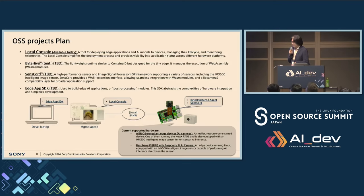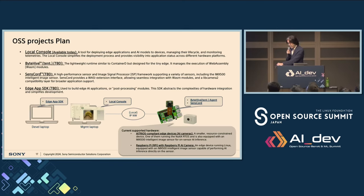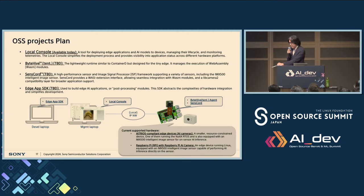There are four open source projects involved in this system. One is Local Console, which is available today — it's a tool for deploying edge applications and AI models to devices, managing their lifecycle, and monitoring telemetry and metadata generated from the device. Then ByteHive, a tentative name to be released — it's a lightweight runtime similar to ContainerD but designed for the tiny edge, running on the device side. And SenseCode, also to be released as open source, running on the device side to access sensor data.